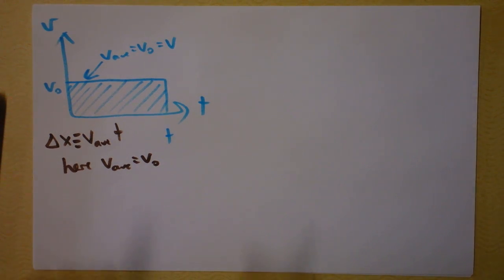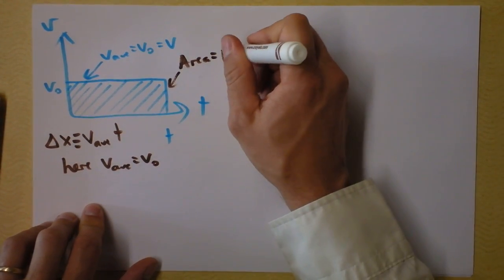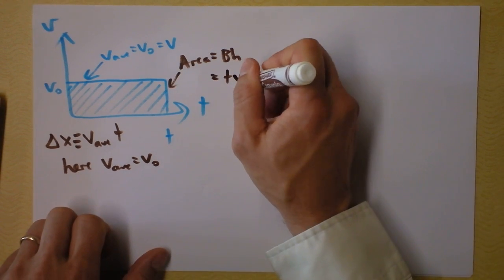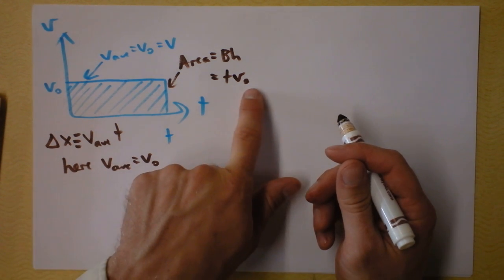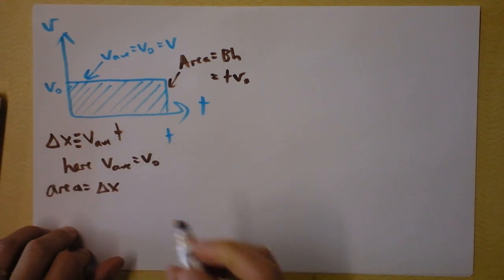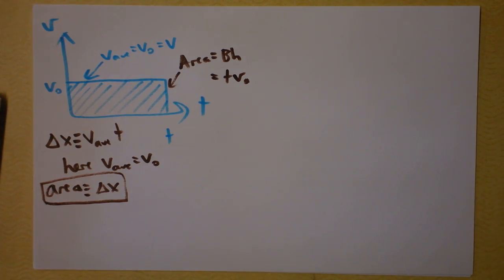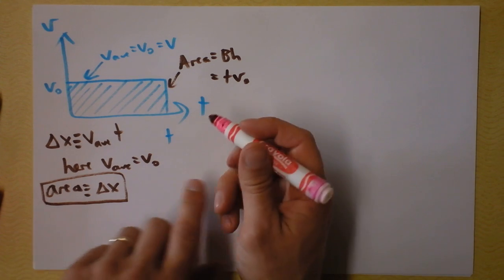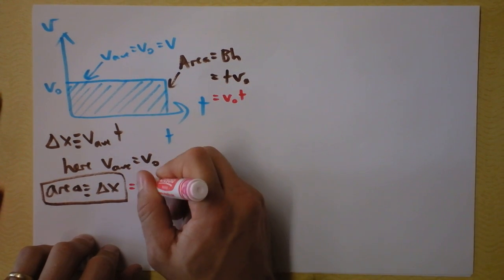Do you see what I can say? The area under this graph — what's the area of this rectangle? Area equals base times height. The base is time and the height is V-naught. Since delta x is V-average times t, and the area is V-naught times t, and V-average is V-naught, in fact the area is delta x. This is a really cool thing. The area defines delta x — that's what delta x really and truly is. So the area is V-naught times t.